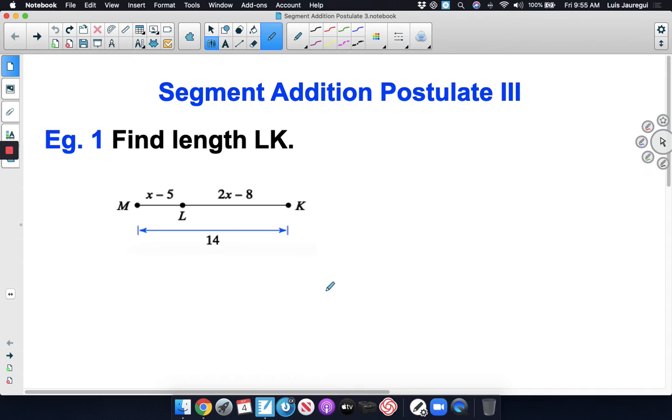Let's take a look at our example. Example 1: Find length LK. Notice that in the diagram, we're given a long segment, namely the segment MK, which is split up into two smaller segments, the segment ML and the segment LK.